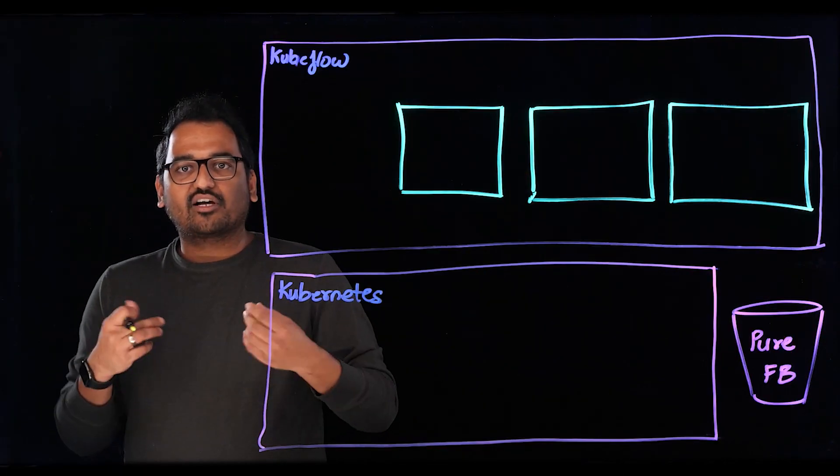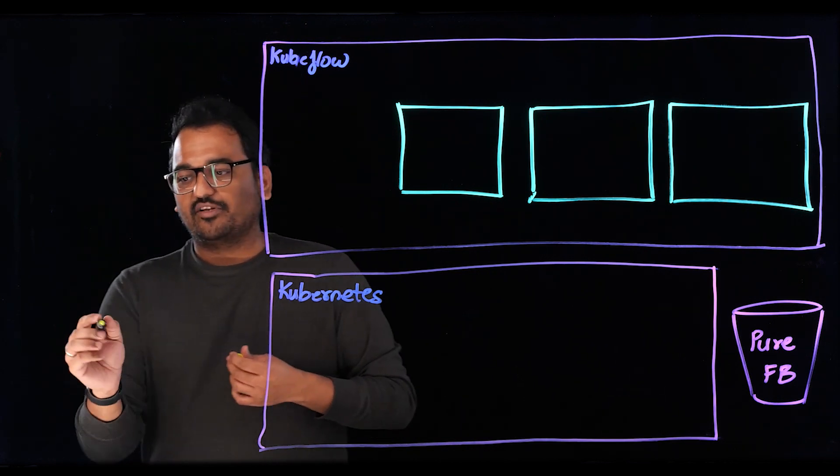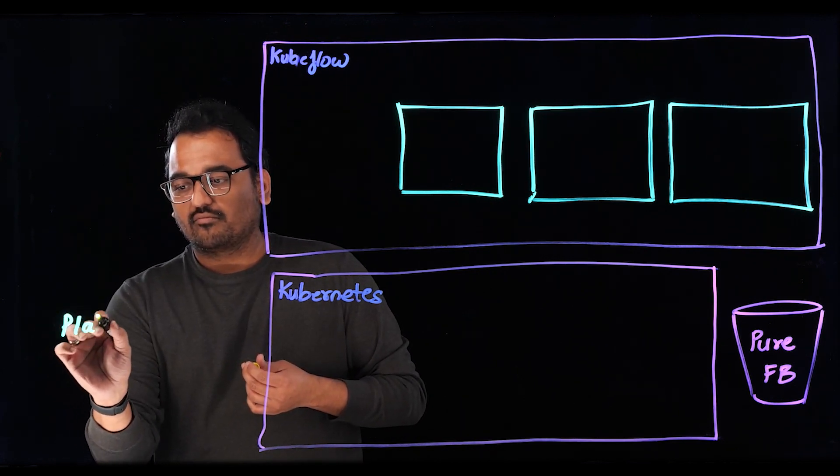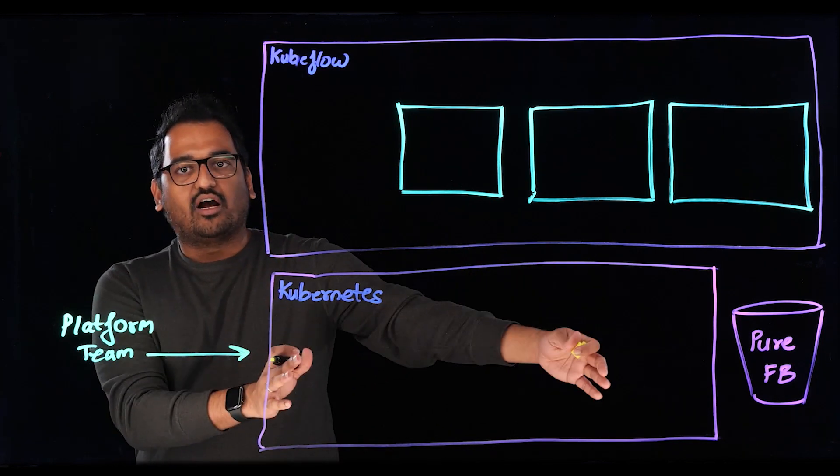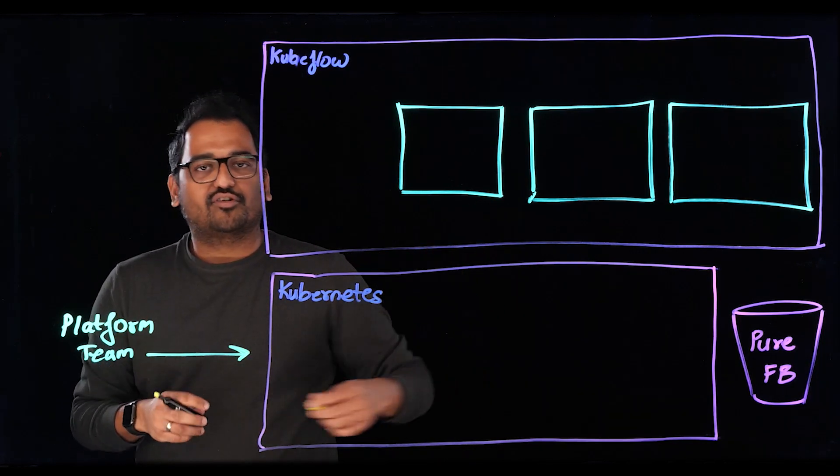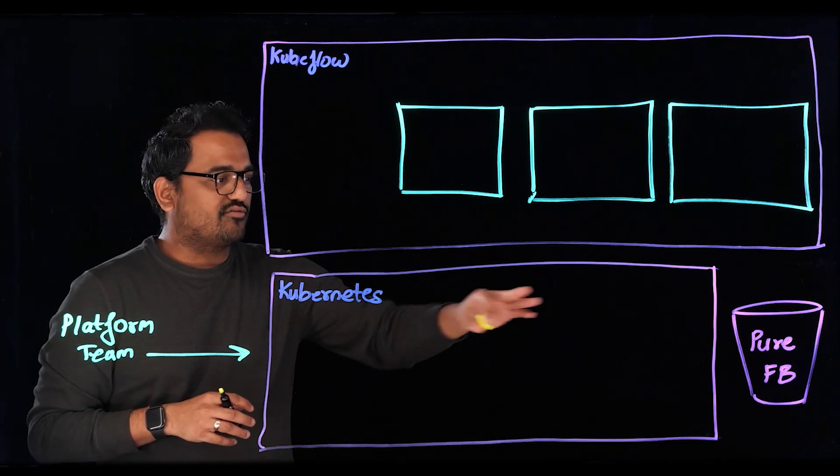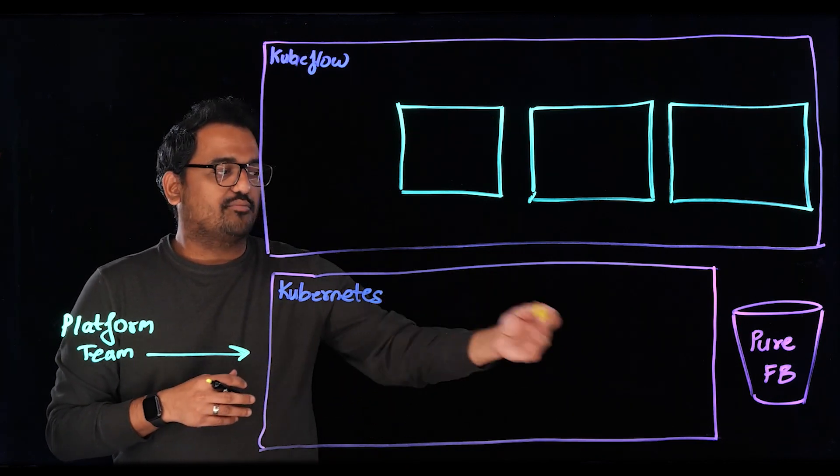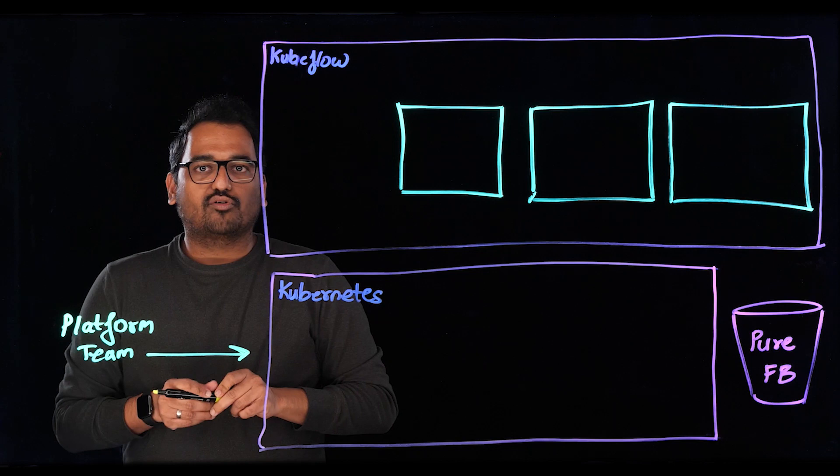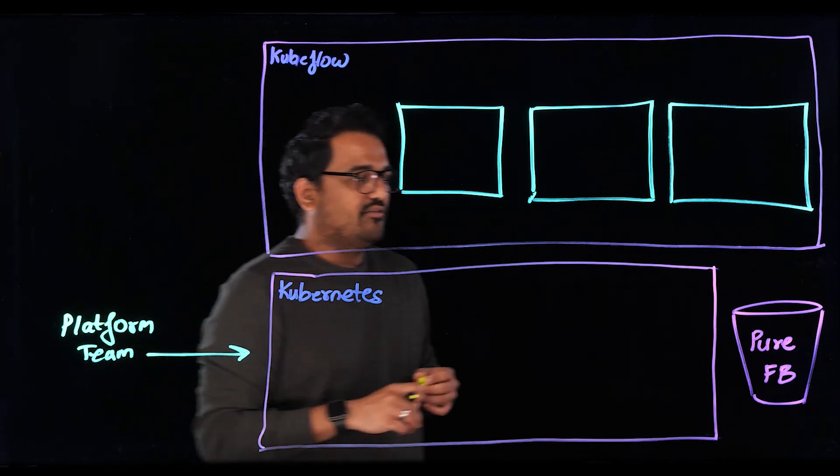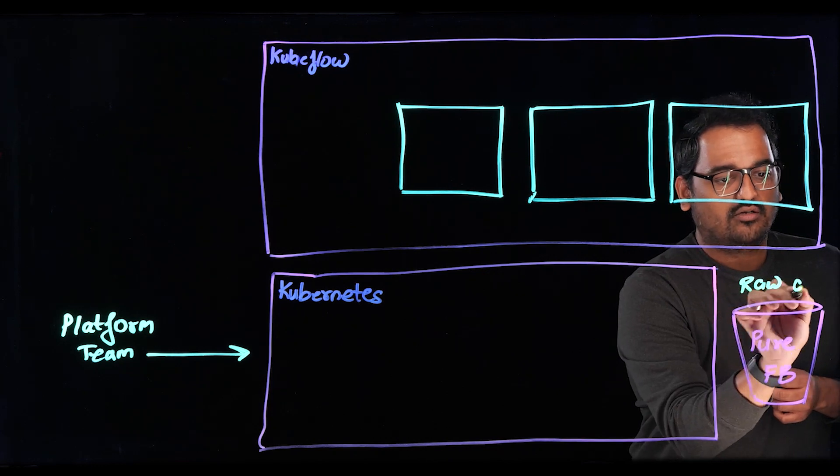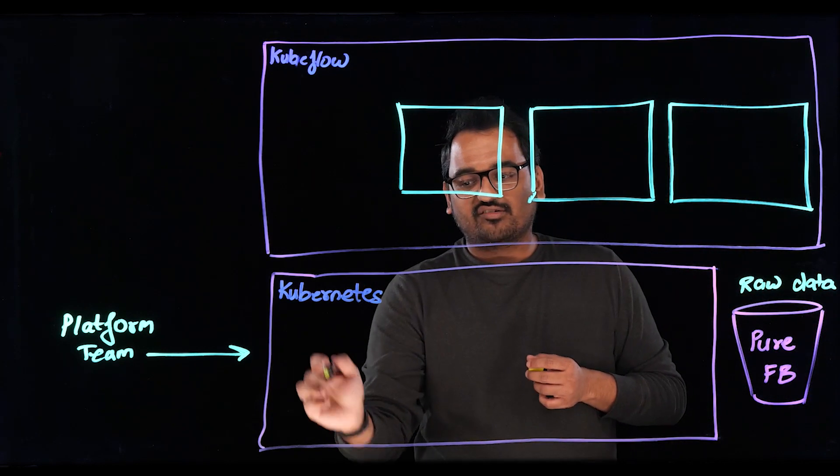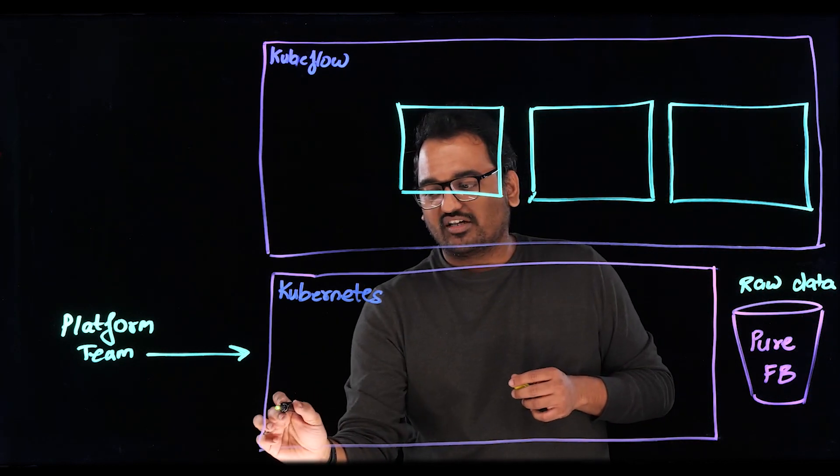So we'll have a couple of personas in this video. We'll have the platform team that will be responsible for building our Kubernetes cluster, the infrastructure underneath it, and also configuring an object storage repository like a Pure FlashBlade to store all of our raw data. So we have already configured FlashBlade, we have stored our raw data, and we have our Kubernetes cluster with nodes and Portworx already installed in it.